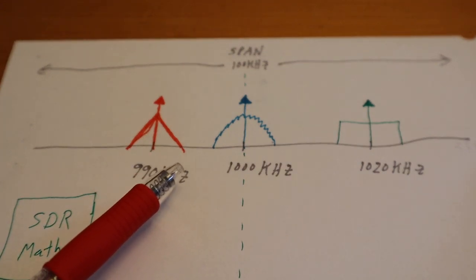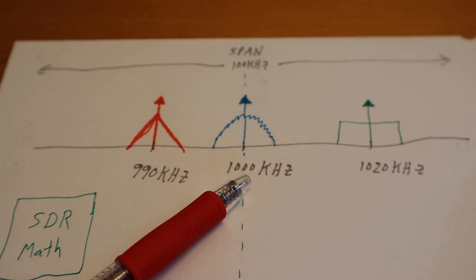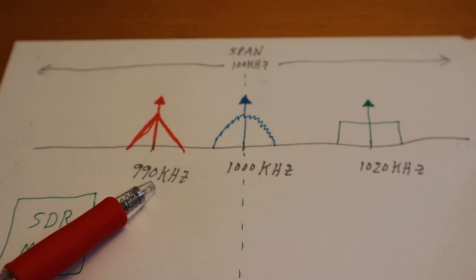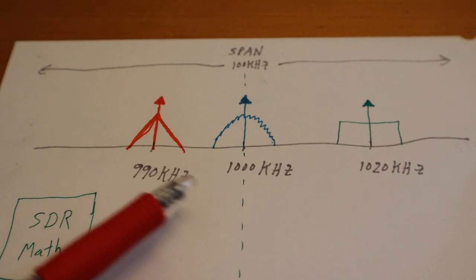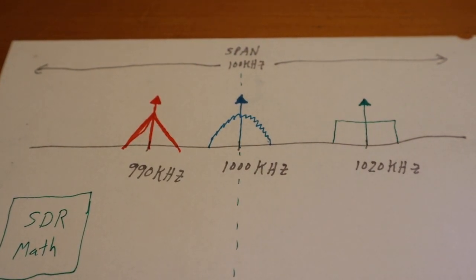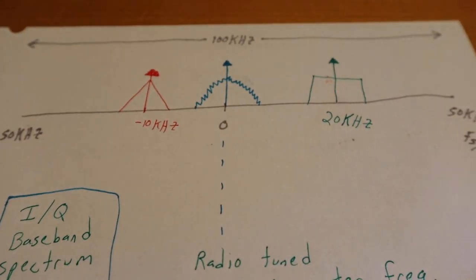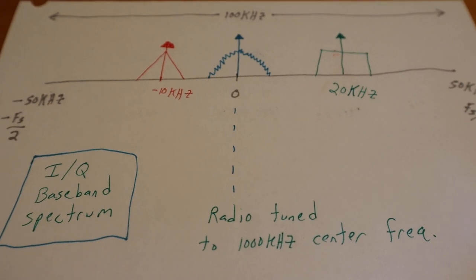We're picking up three radio stations: a radio station at 1000 kilohertz, another guy at 990 kilohertz, and another guy at 1020. Now that's all well and good, but what's really coming into your radio?